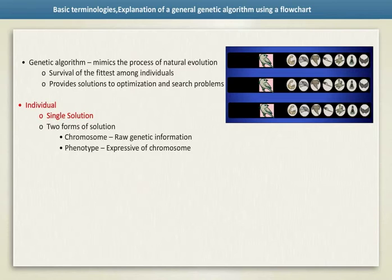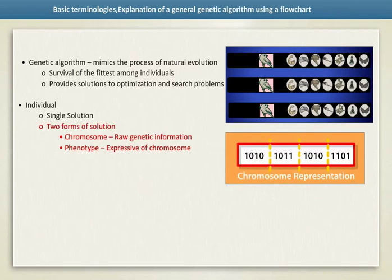An individual is a single solution. An individual has two forms of solution: chromosome and phenotype. Chromosomes are the raw genetic information, whereas phenotype is the expression of the chromosome in terms of the model.